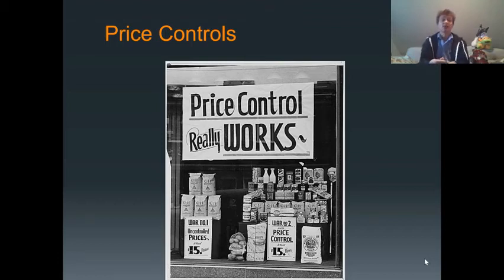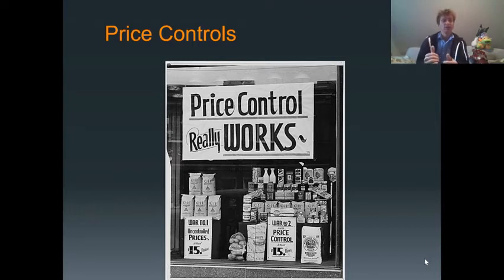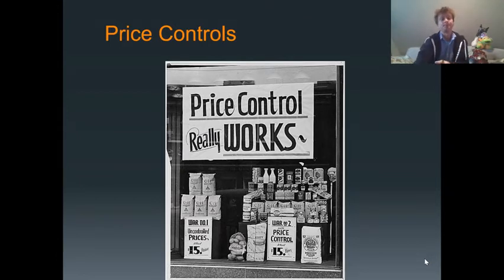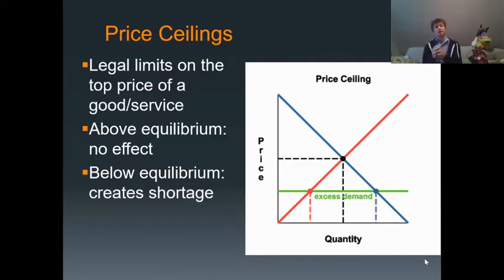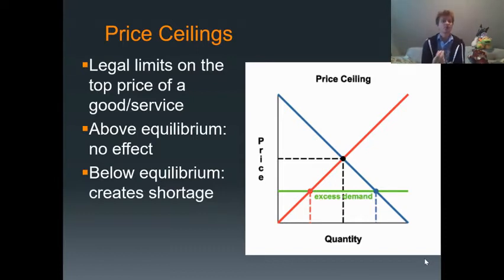For this lesson we're taking a look at price controls — the government stepping in and saying how much or how little can be charged for a specific product. We're going to see what effects that has on a market. There are two types of price controls: price ceilings and price floors.